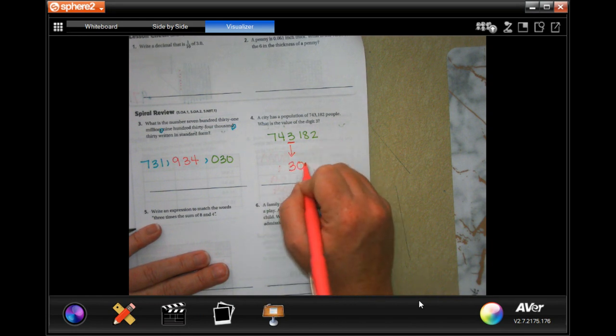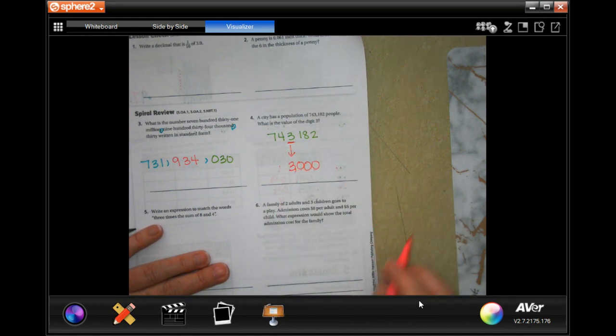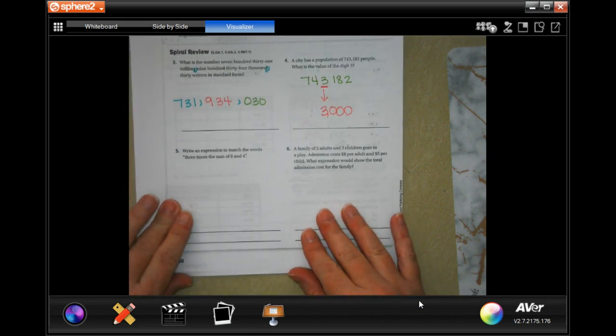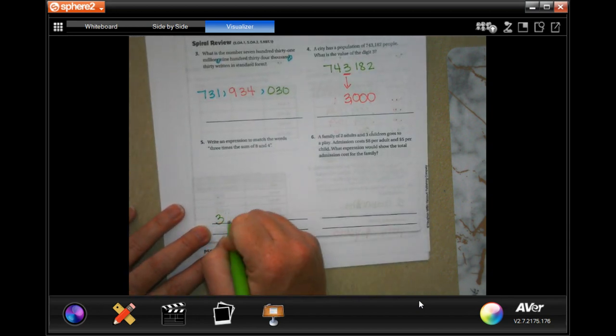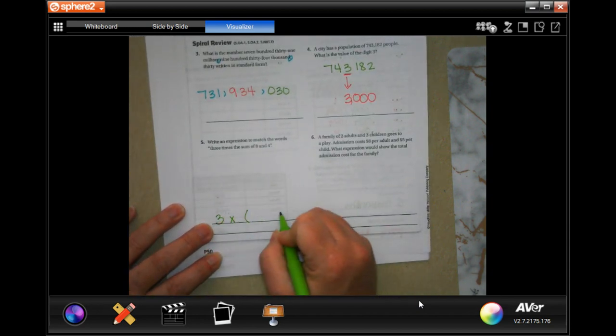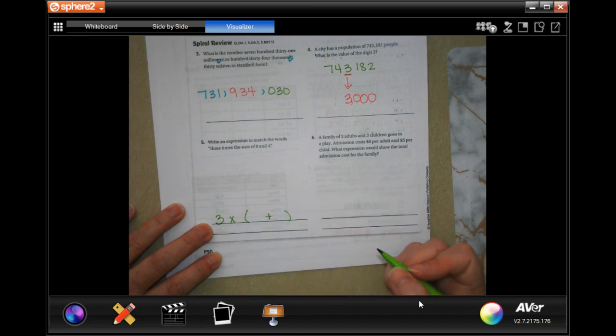Write an expression that matches the words three times the sum of eight and four. Well three times the sum - that means adding, the sum is when you add - eight and four. Easy peasy guys.